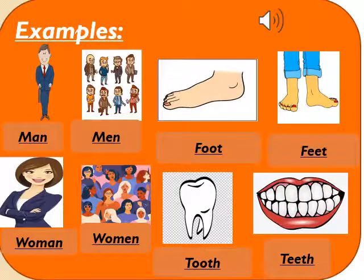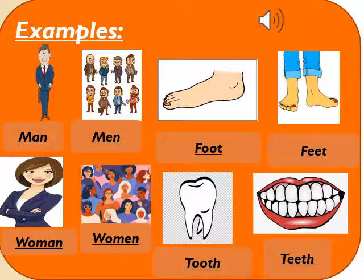Let us explore examples related to rule number 7. Man — M-A-N — means one man. Men — M-E-N — means more than one man. Foot — F-O-O-T — means one foot. Feet means both feet in a pair.